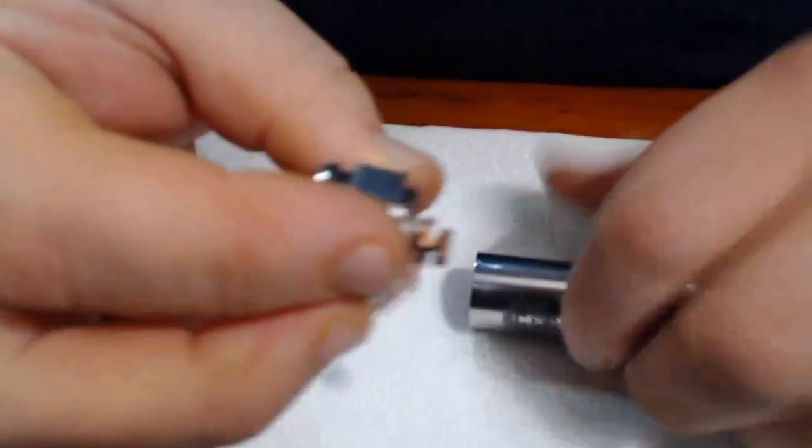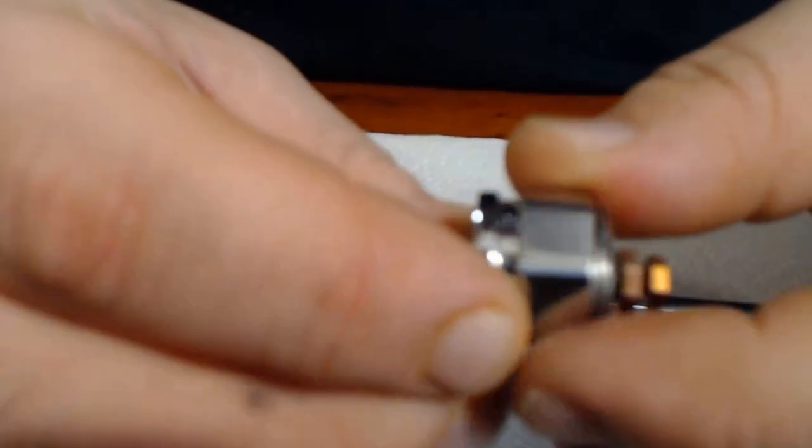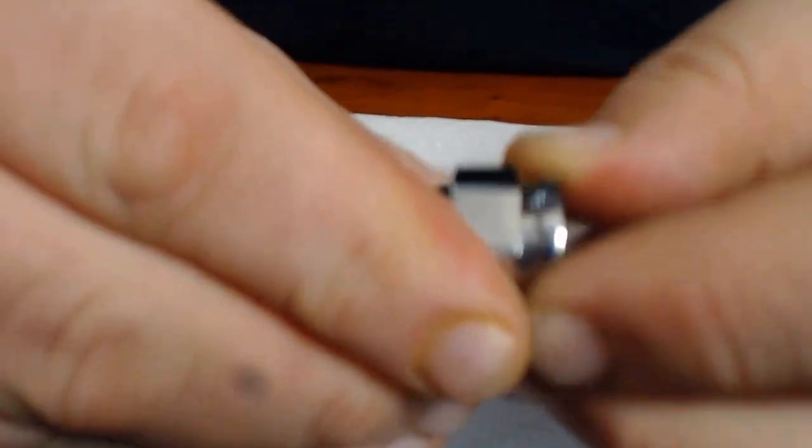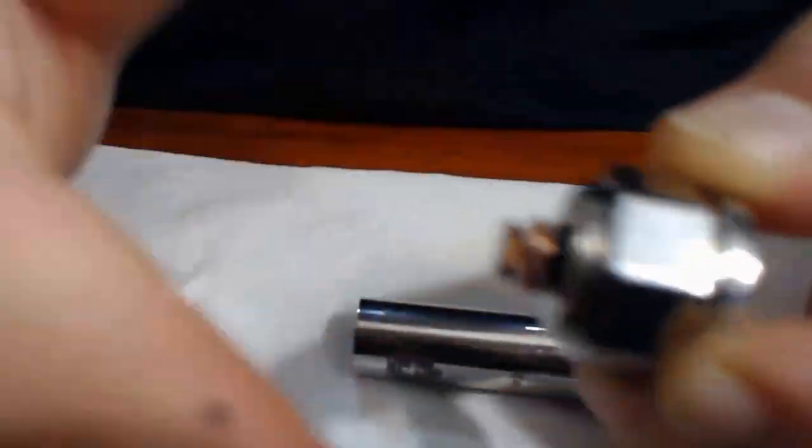Now what I failed to mention, this top piece has an adjustable airflow. This hexagon ring can turn, underneath it has little holes all the way around it. You can close it off by turning clockwise, or counterclockwise to have more of an open airy draw.